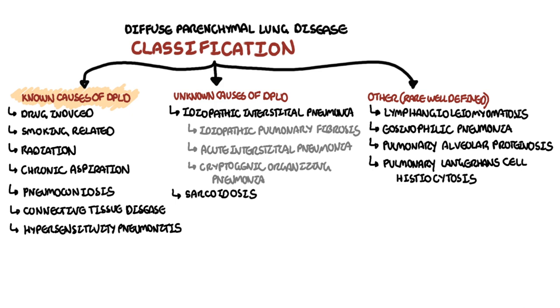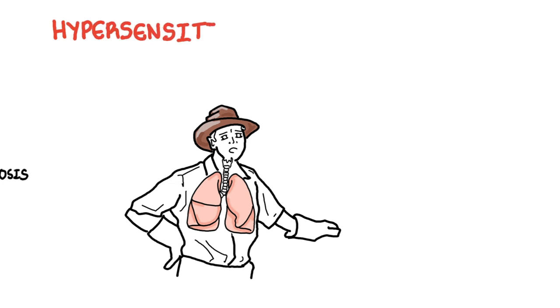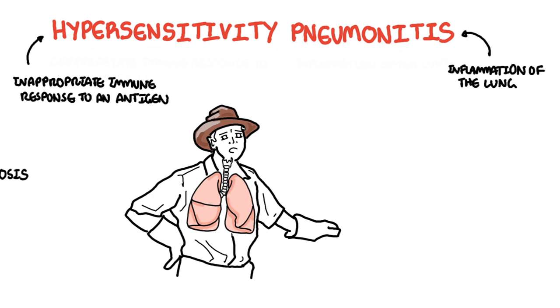In this video, we're going to talk about hypersensitivity pneumonitis, a known cause of diffuse parenchymal lung disease. Hypersensitivity pneumonitis is a type of interstitial lung disease. Hypersensitivity means an inappropriate immune response to a particular antigen, and pneumonitis means inflammation of the lungs. Hypersensitivity pneumonitis is therefore an inappropriate immune response to an antigen or allergen resulting in inflammation of the lung. That is why hypersensitivity pneumonitis is also known as extrinsic allergic alveolitis.